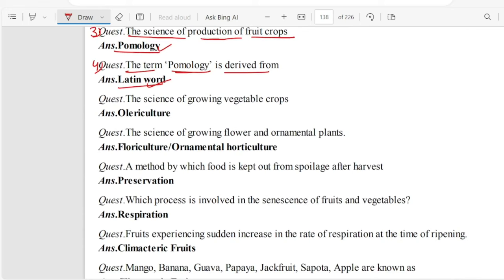Question 5. The science of growing vegetable crops is called Olericulture. The science of production of fruit crops is called Pomology. If you want to use mango cultivation, you can use pomology science.